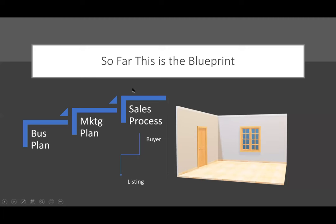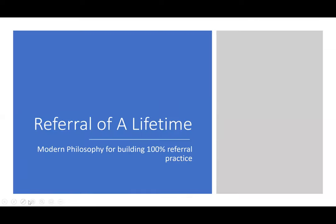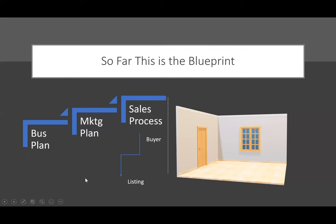This has been our blueprint to date. Let's look at your business sort of like building a home, building a structure. We have the business plan, the marketing plan inside the business plan, and then the sales process — one side for buyers, the other side for listings. Some of it has the same exact process and some has differentiations based on which you're working with.